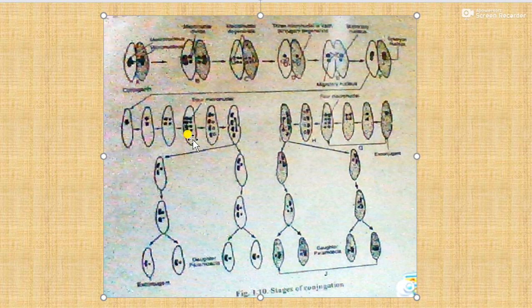The synkarion of each ex-conjugant divides mitotically three times and forms eight micronuclei in each conjugate. The ex-conjugant divides by binary fission into two cells.